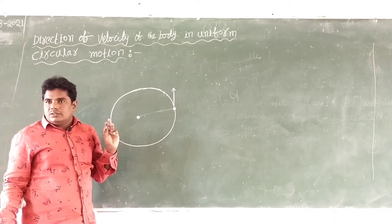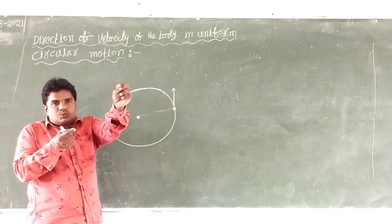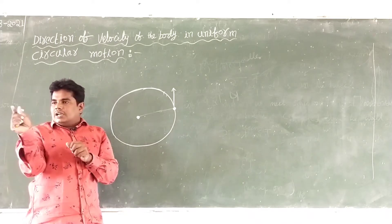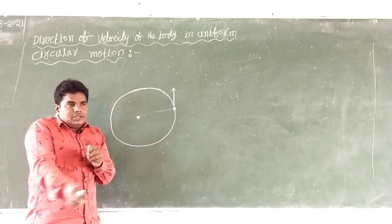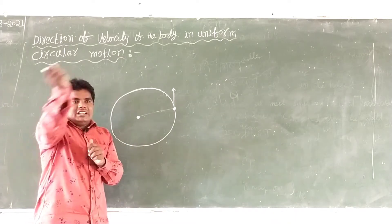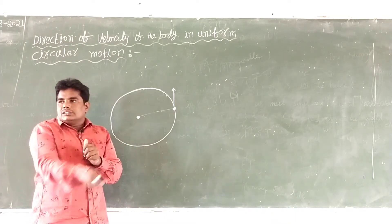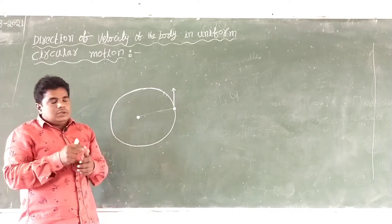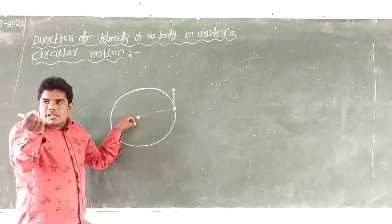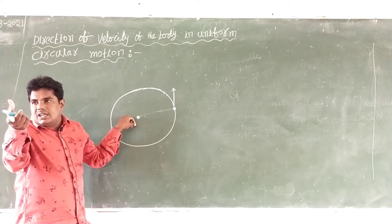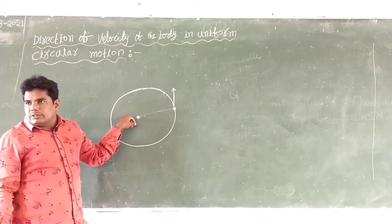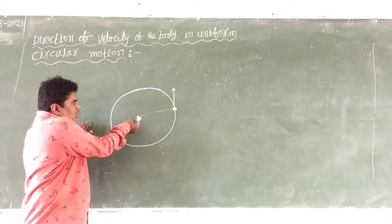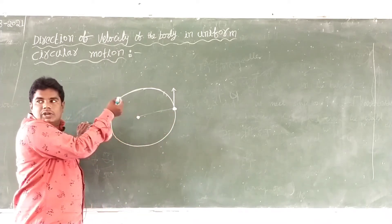Let me show you the point. Let me show you the string. We have a stone, and that string is the other end of the string. If I am doing a circular motion — I'm doing a revolution — that means the stone is doing a circular path. The string is in a direction.